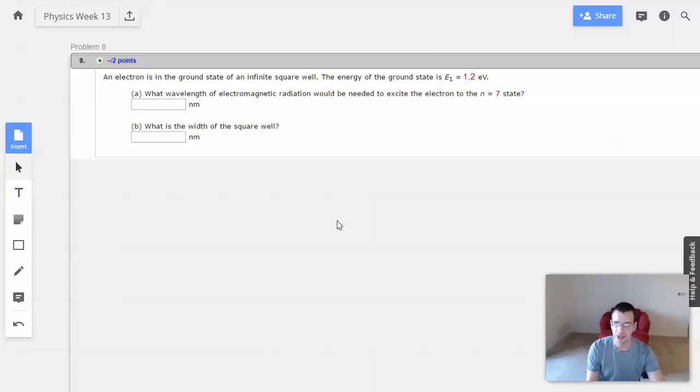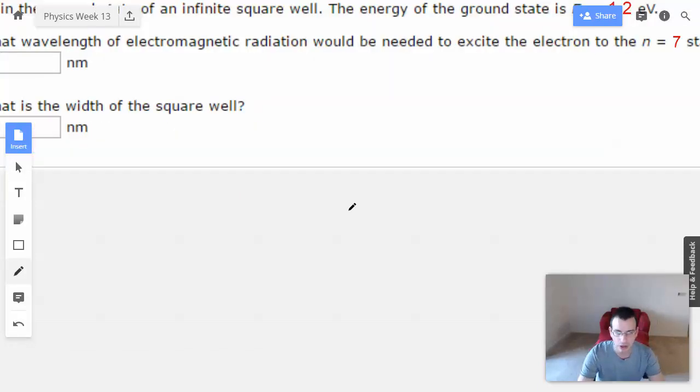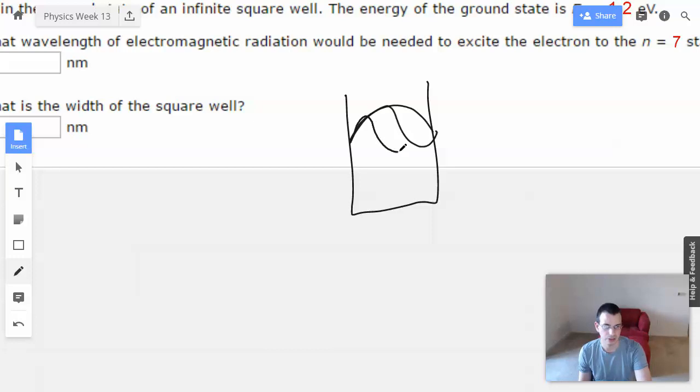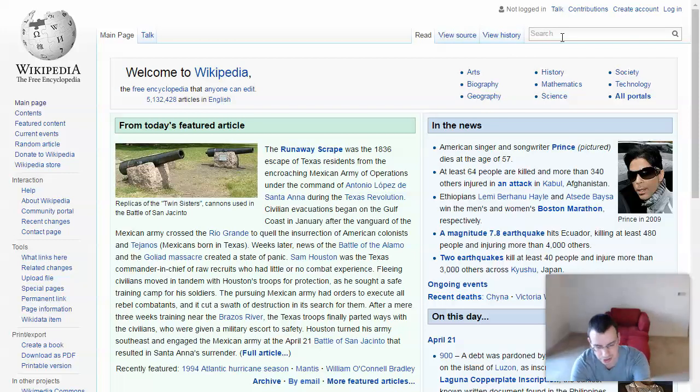Alright, so this is a particle in the box problem. The idea here is we have a box, like so. First state would be this, second state would be like this, third state would be like that. It's basically the number of nodes, the parts that don't move, minus 1. So there would be 8 nodes for a 7 state. But before you think too deeply about it, let's just go to the equation.